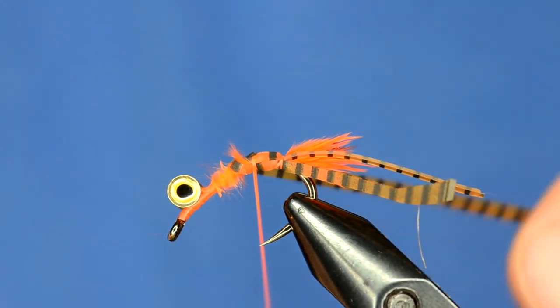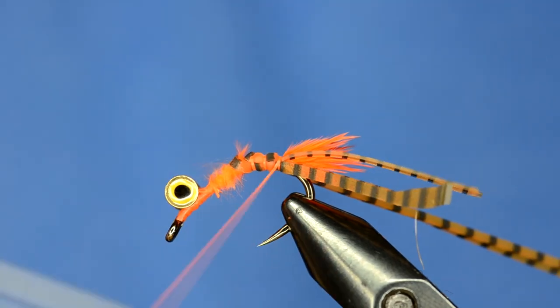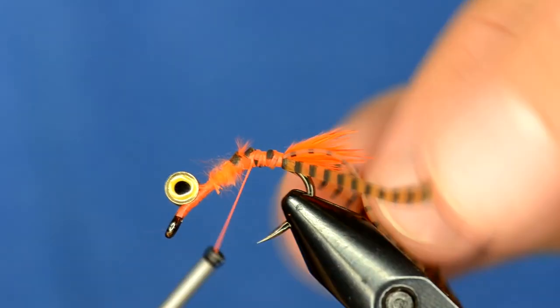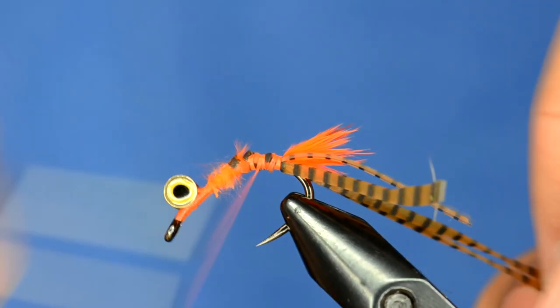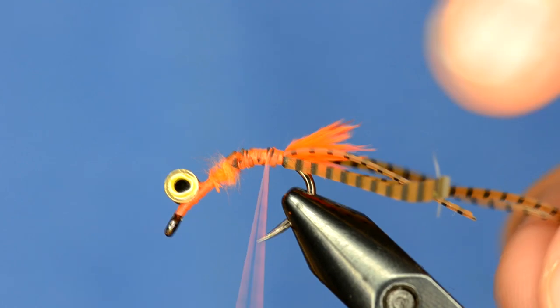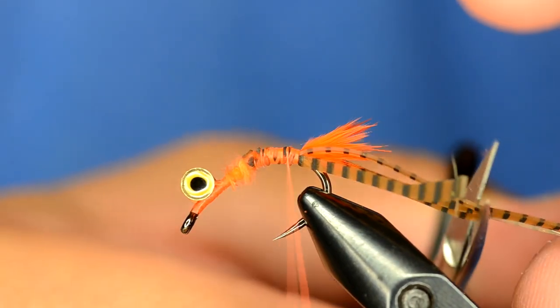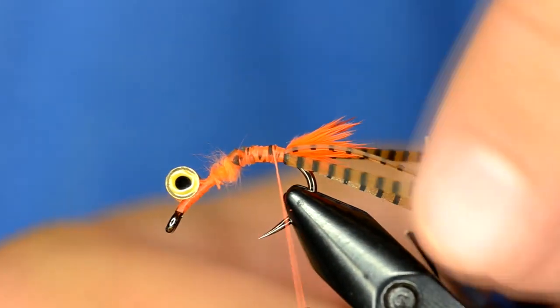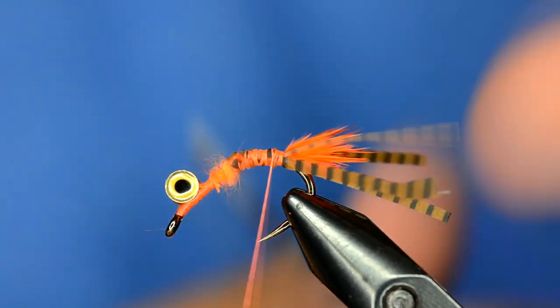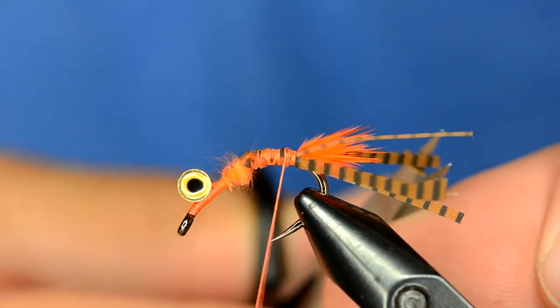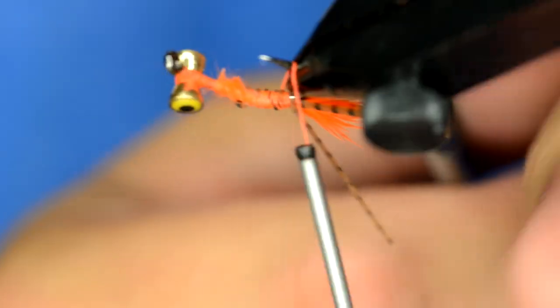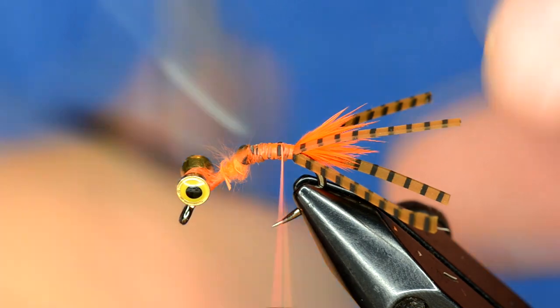And then I'm just going to bring those back on the other side. So essentially now I have four of these Magnum Legs tied in the back of this fly. Now you might think that's pretty bulky and I agree. I'm going to trim those off and then I'm going to give each one of those a little bit of a trim job and trim those to a point.